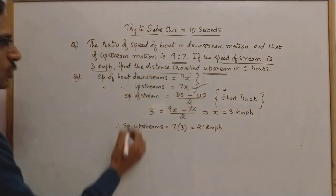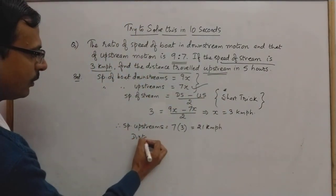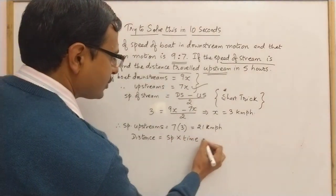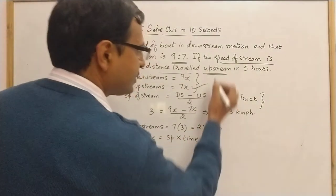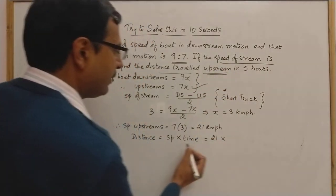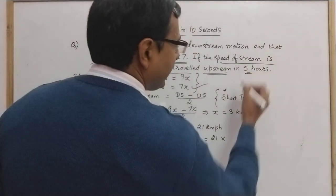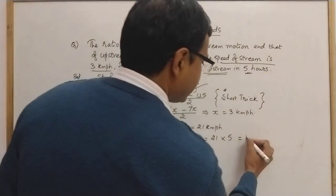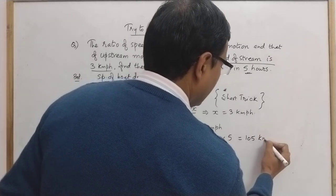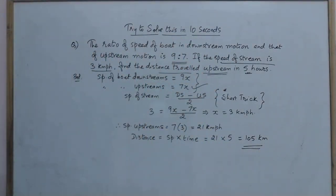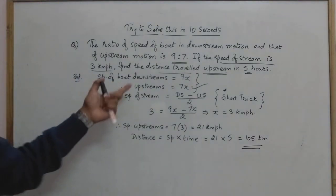Now, the formula for distance is: distance = speed × time. Speed upstream is 21 km/h and time is 5 hours. So distance = 21 × 5 = 105 kilometers. This is the shortest possible method of solving this question, and you need to be aware of it to avoid consuming a lot of time.